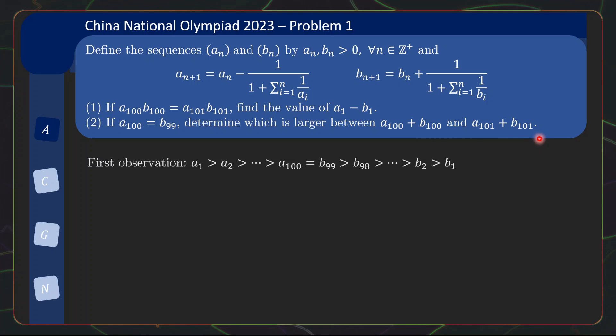and we are supposed to determine which is larger between a100 plus b100 and a101 plus b101. The first observation we will make, actually you might have made this observation even before starting the problems, is that the aIs are strictly decreasing. This is because the next term of aIs is given by the previous term minus things that are positive. On the other hand, the bIs are strictly increasing because the next term is given by the previous term plus something strictly positive. This string of inequalities are connected by this equality given here. Let us keep this observation at the back of our mind.